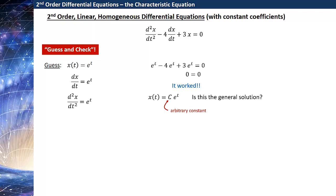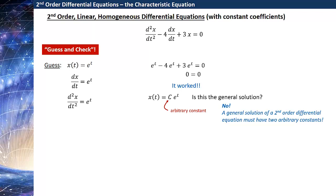In fact, I can make it a more general solution by saying x of t is equal to c·e to the t, where c is some arbitrary constant. So I now have a solution with an arbitrary constant. But as we talked about, a general solution of a second-order differential equation should have two arbitrary constants. I only have one here. So I've guessed half of the solution, but I need to figure out some way to guess the other half.